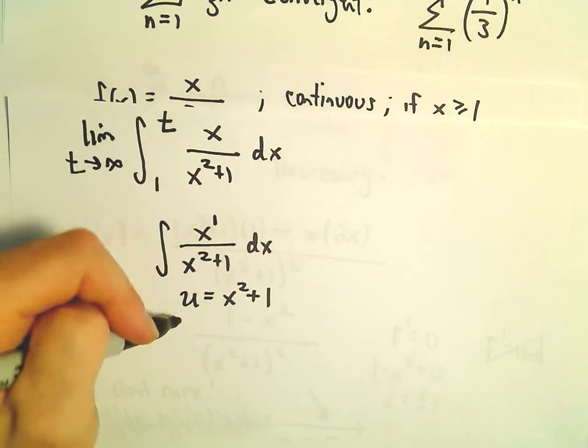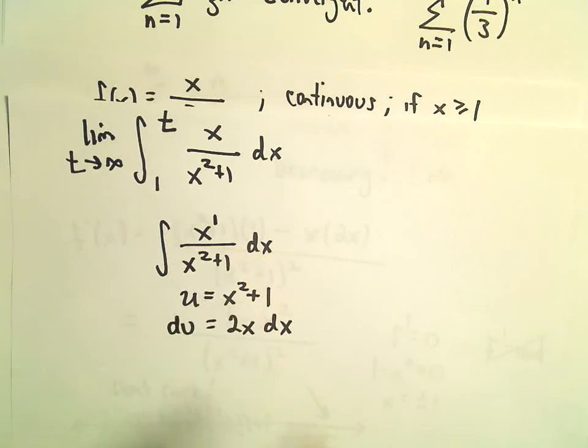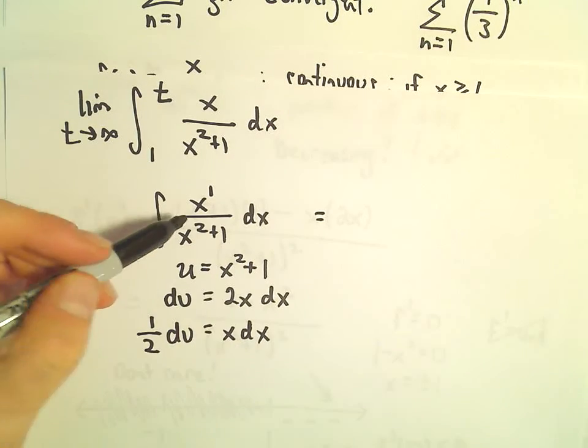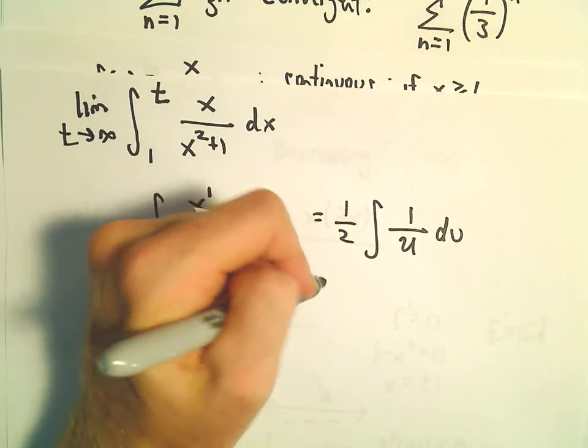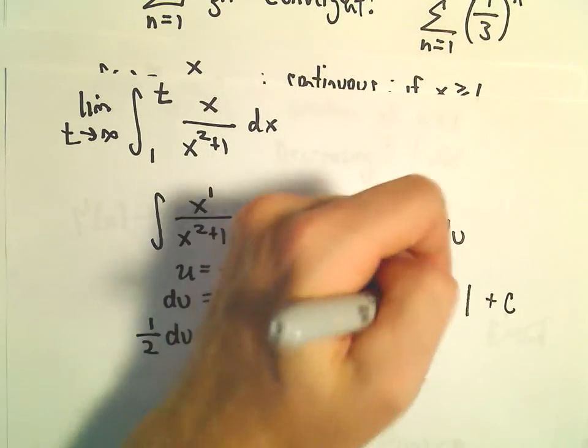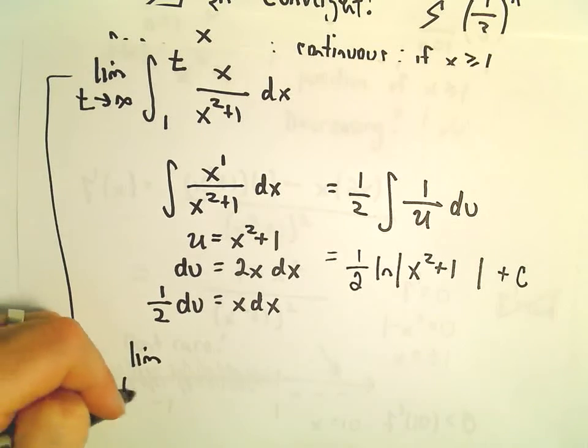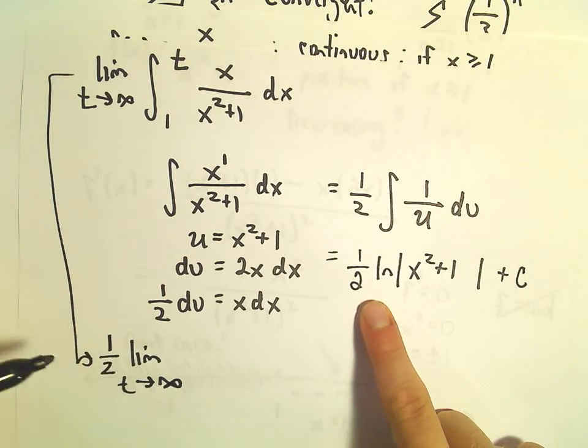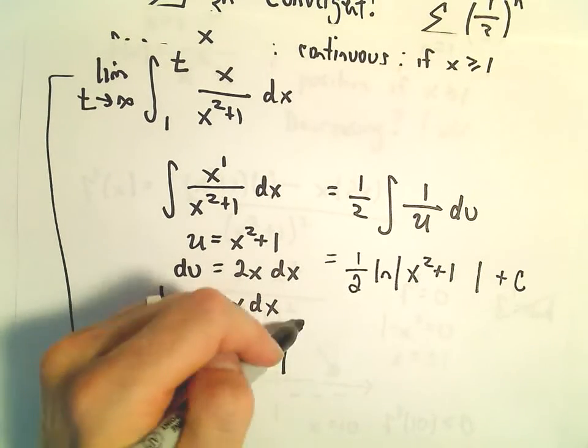If we let u equal x squared plus 1, du is going to be 2x dx. We only need an x dx, so I'm going to multiply both sides by 1 half. So then the x dx will be our 1 half, then we'll have the integral 1 over u du. If we integrate this, we have 1 half times the natural logarithm of u plus c, but u in this case is x squared plus 1. So that tells us that we'll be left with the limit as t goes to infinity. After we integrate, we'll get this function. I'm going to pull the 1 half out front. We'll be left with the natural logarithm of x squared plus 1, and then from 1 to t.